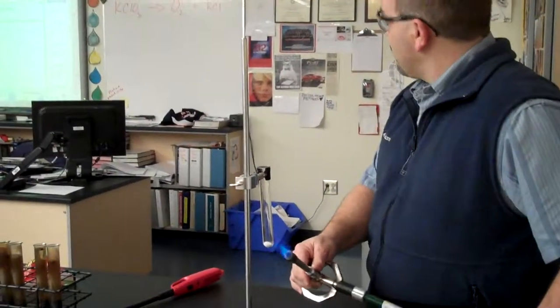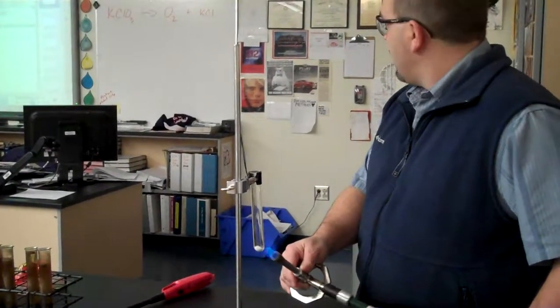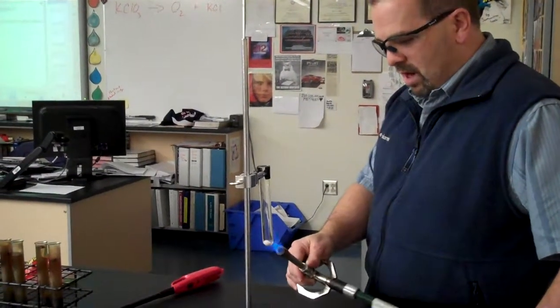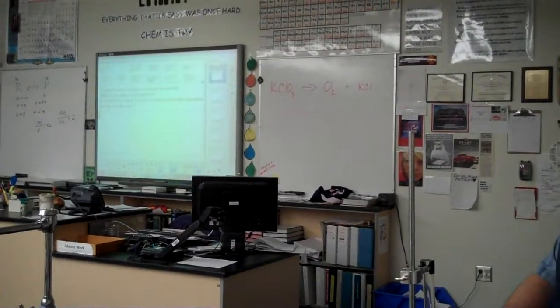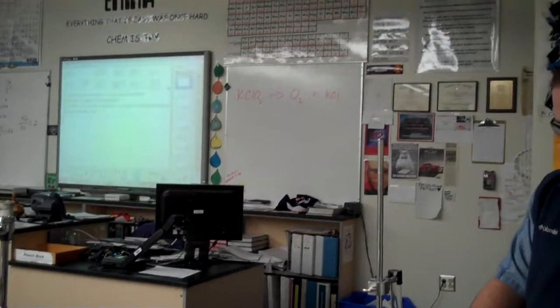And if you look at the reaction up there on the board, you can see the potassium chlorate is going to break up into some potassium chloride and some oxygen.